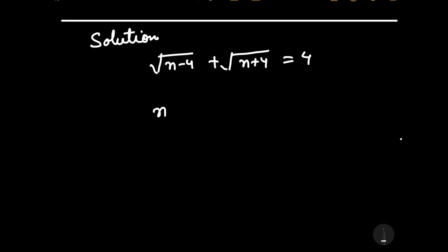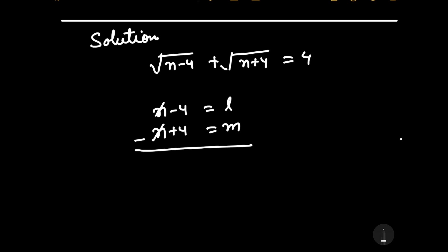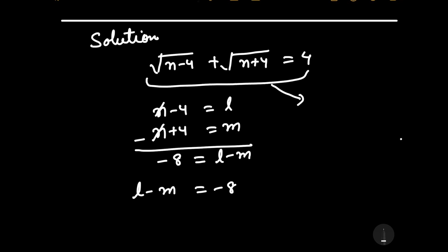Let us consider n minus 4 is equal to l, and n plus 4 is equal to m. If we subtract these, n cancels out, and we get l minus m is equal to minus 8. The original equation can then be written as square root of l plus square root of m is equal to 4.